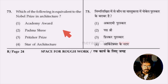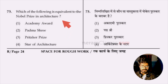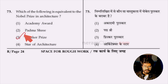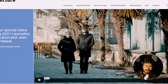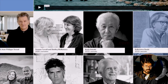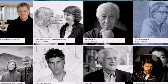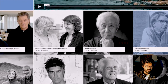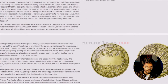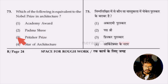Question 73: which of the following is equal to the Nobel Prize for architecture? The answer is the Pritzker Prize — option three. The Pritzker Prize is awarded annually to a single architect for their best contribution to architecture, along with a cash award and a medal. BV Doshi is the Indian person who has won this award so far.